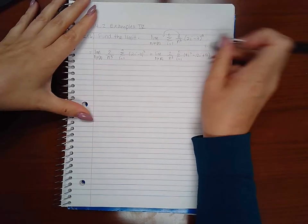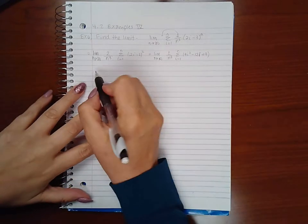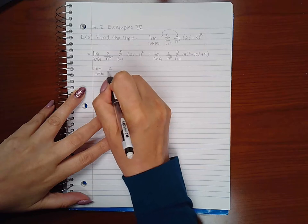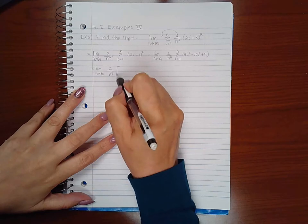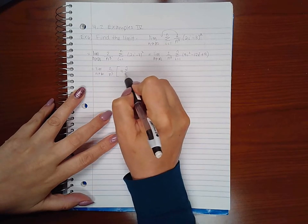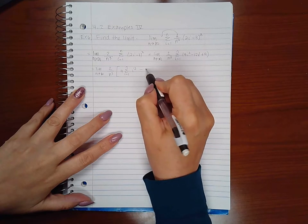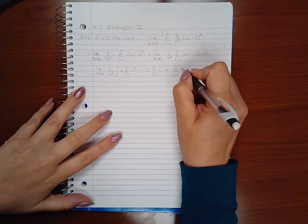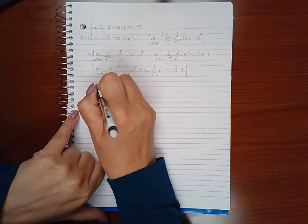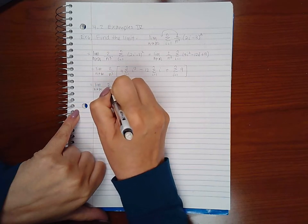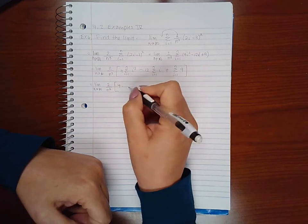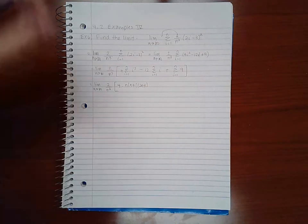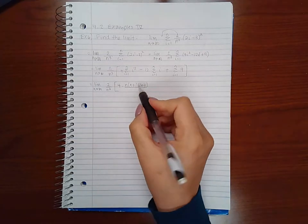So 2i times 2i is 4i squared, 2i times 3 is negative 6i and double that that's negative 12i, and the negative 3 times negative 3 is 9. All I am doing is taking 2i minus 3 and multiplying it times itself. Now I'm going to separate this into each term, so I have 2 over n cubed and then here I'm going to take out the constant and leave i squared, minus take out the constant leave in the i, and then here it's just a constant. So here I have LIM as n goes to infinity, and now I'm going to apply my summation rules, so I get 4 times n times n plus 1 times 2n plus 1 over 6 for i squared.